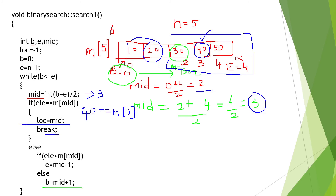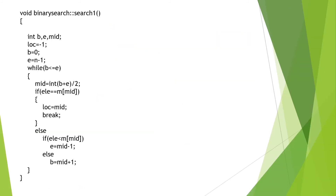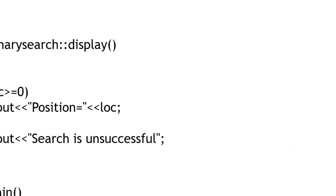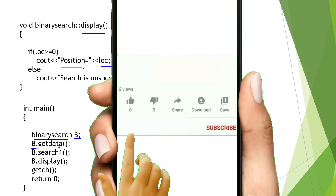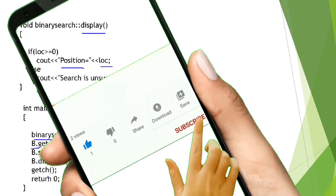You can try this dry run for other cases — search for 20 on the left side, or for 100 which is not in the array — to verify the program. Doing a dry run is a good practice to ensure your program works correctly. After the search, the display function shows the location. In the main function I create an object of class binary_search and call b.get_data(), b.search_one(), and b.display().